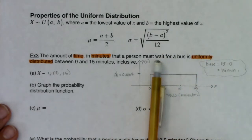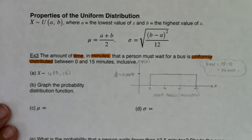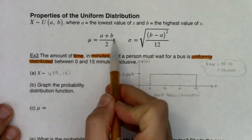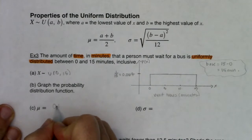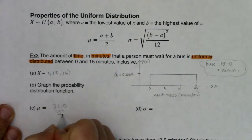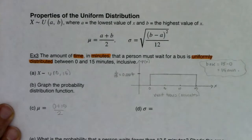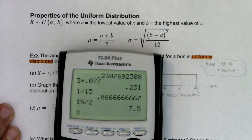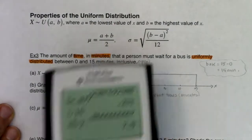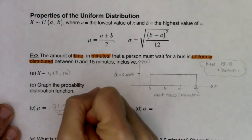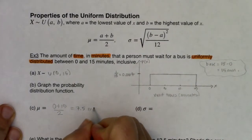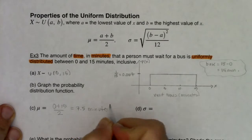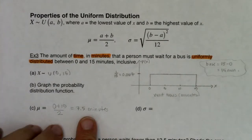When I show up to catch a bus, I wait somewhere between 0 and 15 minutes. What's my average wait time? We go a plus b over 2. A is 0, b is 15, so this is 0 plus 15 divided by 2. That's basically 15 divided by 2, which is 7.5. Every statistic has the same units as your variable, so the mean is 7.5 minutes. On average, someone's going to wait about 7 and a half minutes to catch this bus.